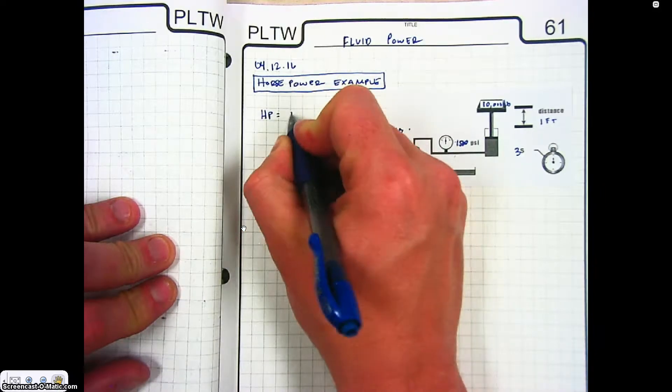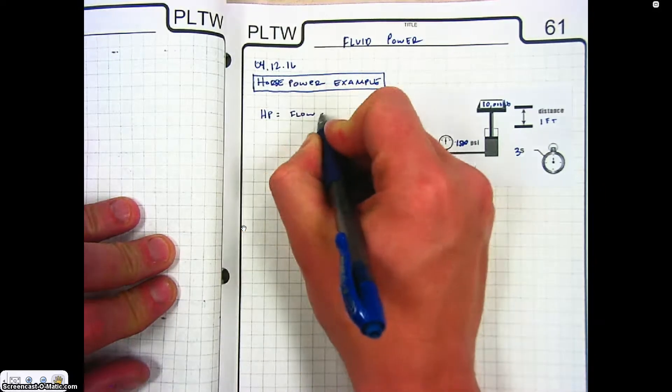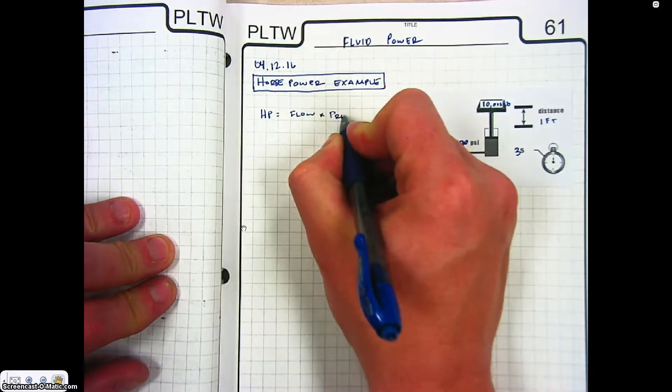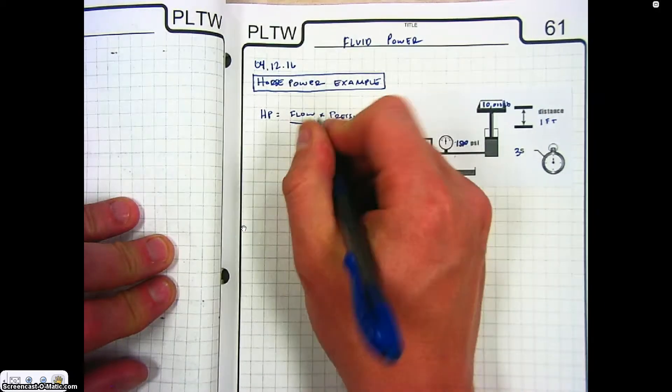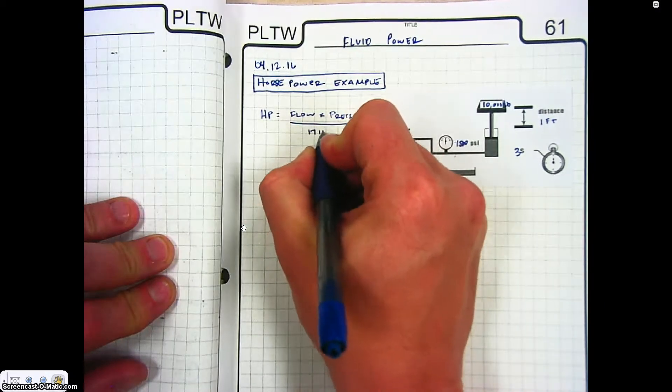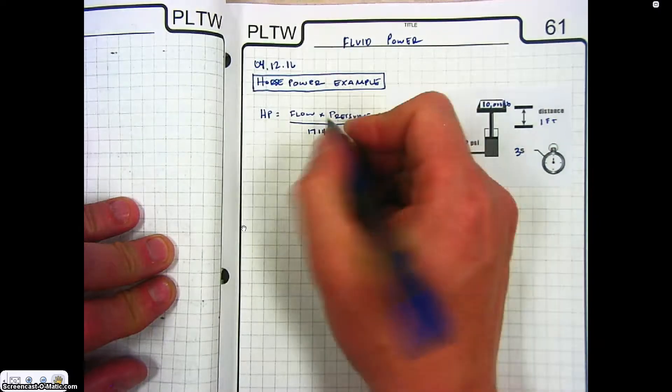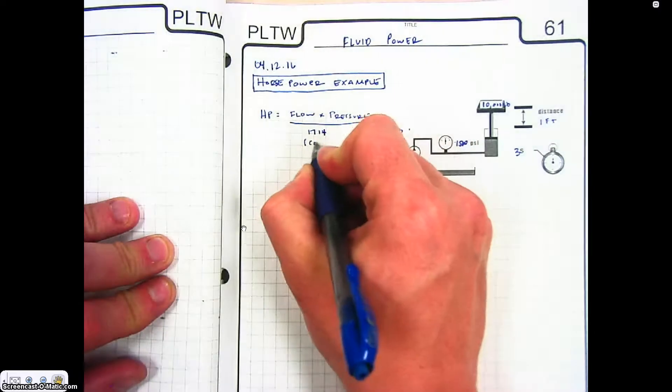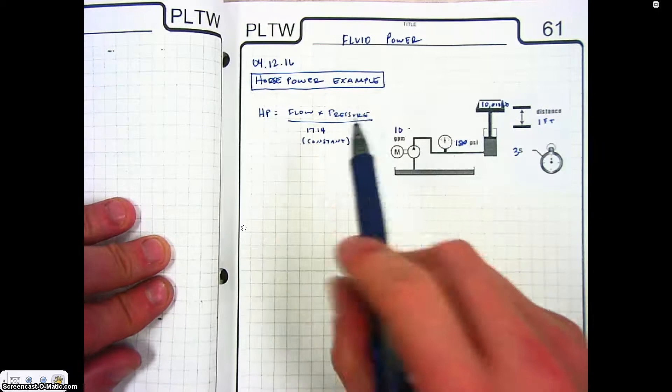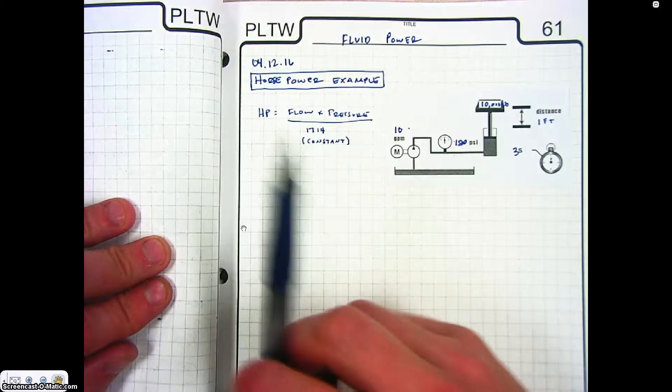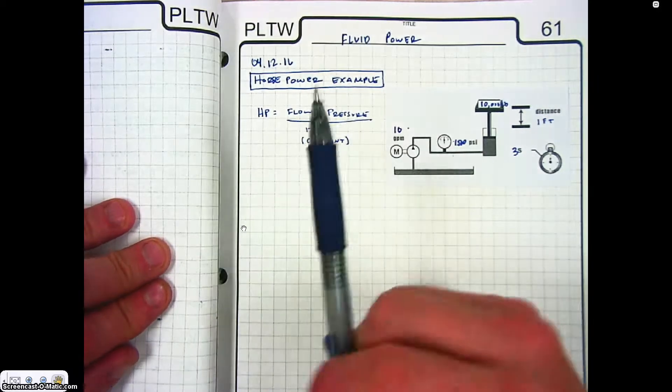Horsepower is equal to flow times pressure divided by 1714. 1714 is a constant number that gets us to the correct unit for that horsepower.